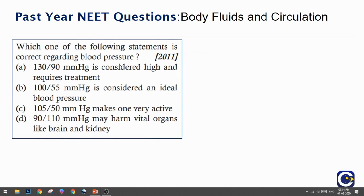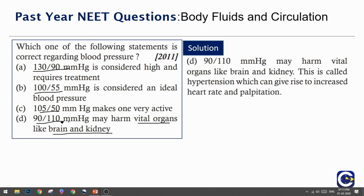Which statement is correct regarding blood pressure? 130/90 mmHg is considered high and requires treatment; 100/55 is considered ideal; 105/50 makes one very active; or 90/110 mmHg may harm vital organs like brain and kidney. This shows systolic and diastolic pressure. When diastolic pressure is really high — above 80 or 90 — it leads to hypertension. So 90/110 mmHg, where diastolic is 110, may harm vital organs like brain and kidney.